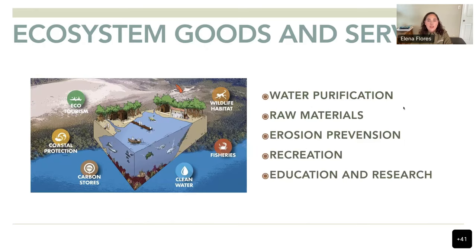In addition, mangroves are a good source for water purification. In Asia, they are an important source for wood, honey, and medicines. They also prevent erosion worldwide and support recreation, education, and research.